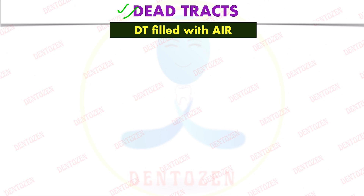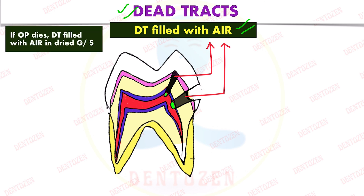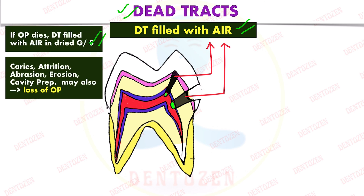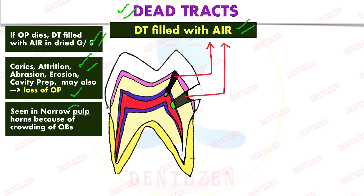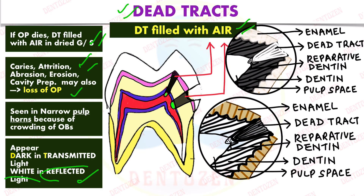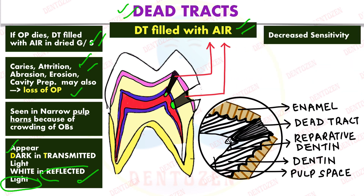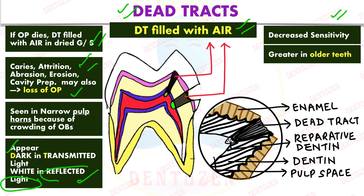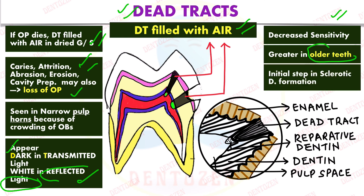Now talking about dead tracts — the odontoblastic process dies and the dentinal tubule gets filled with air, appearing as a dark area in dried ground sections. Caries, attrition, and erosion can also lead to loss of the odontoblastic process. This is most commonly seen in the narrow pulp horns, where odontoblast cells are usually crowded. Dead tracts appear dark in transmitted light and white in reflected light — that can be a viva question. This leads to decreased sensitivity because the odontoblastic process is absent and dentinal fluid is reduced, as dentinal fluid is required for sensitivity. Dead tracts are seen more in older teeth, are considered an age change, and may be an initial step in sclerotic dentine formation.